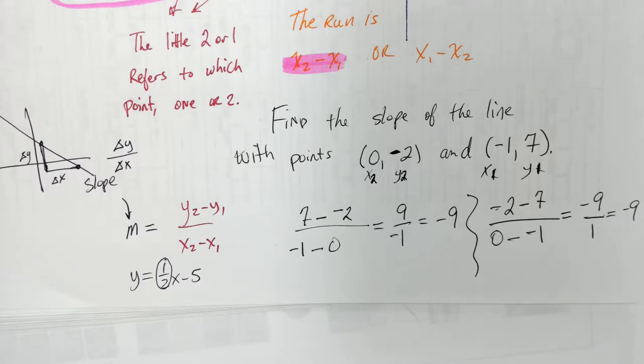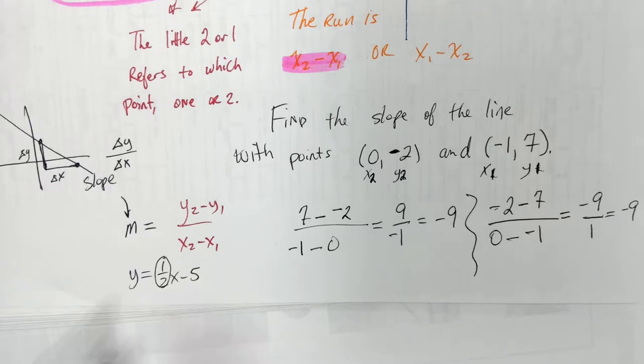Negative 5 is the y-intercept — we're going to talk about that in a little bit. But you're right. So that's three ways to find slope.